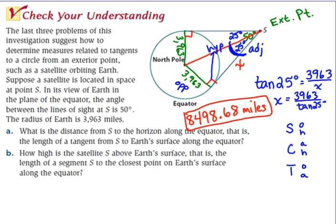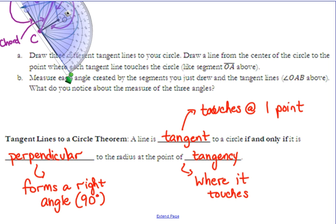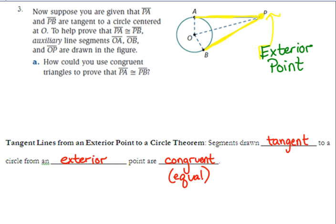Here's what you are going to have to know: if it's tangent, it's perpendicular — it forms the right angle. And then you're going to have to use the property that two tangent lines from the same exterior point are congruent to each other.